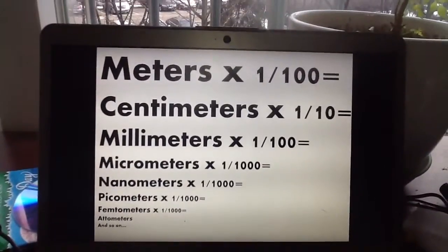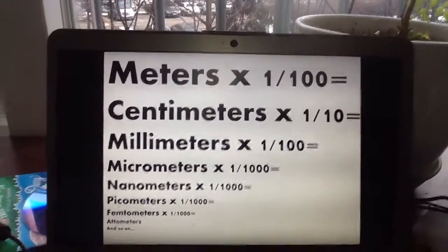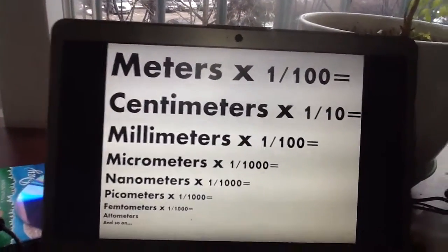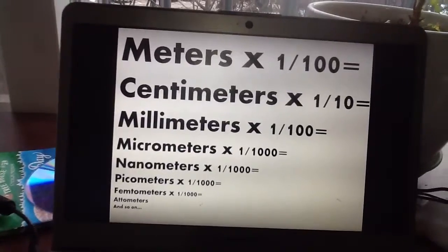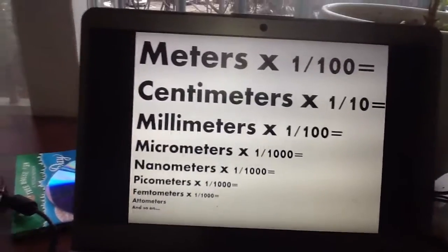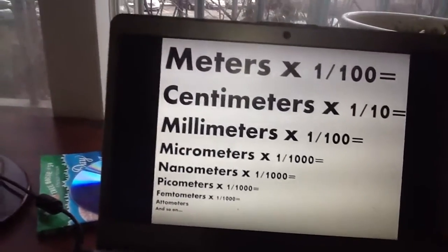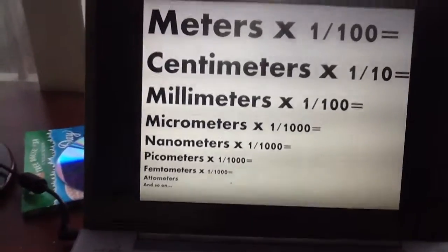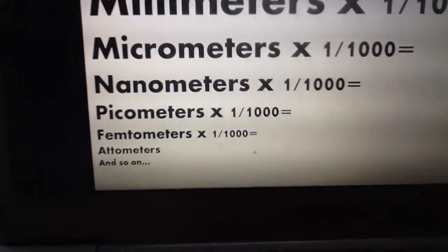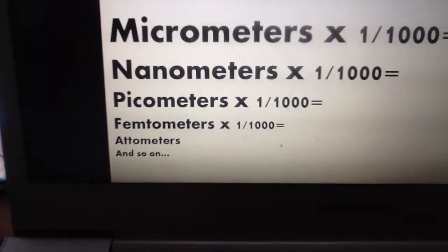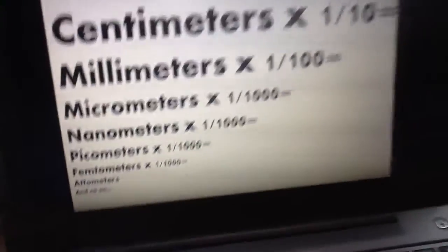This small chart: meters times one-hundredths equals centimeters, centimeters times one-tenth equals millimeters, millimeters times one-thousandths is micrometers, micrometers times one-thousandths equals nanometers, nanometers times one-thousandths equals picometers, picometers times one-thousandths equals femtometers, and so on.